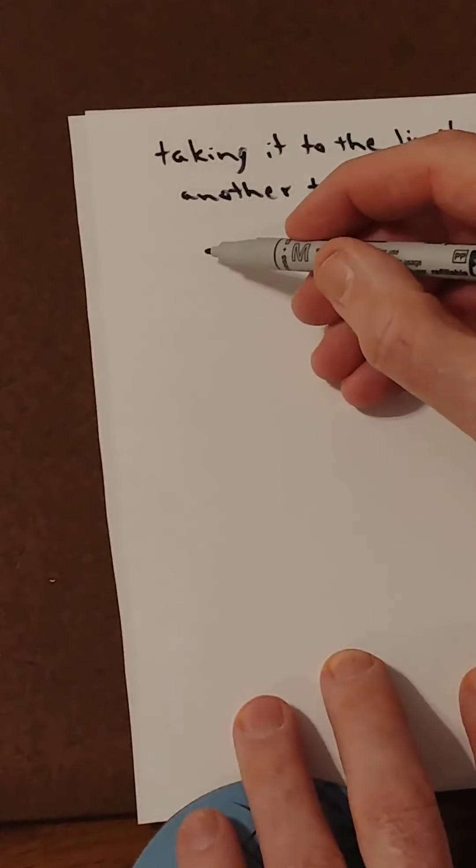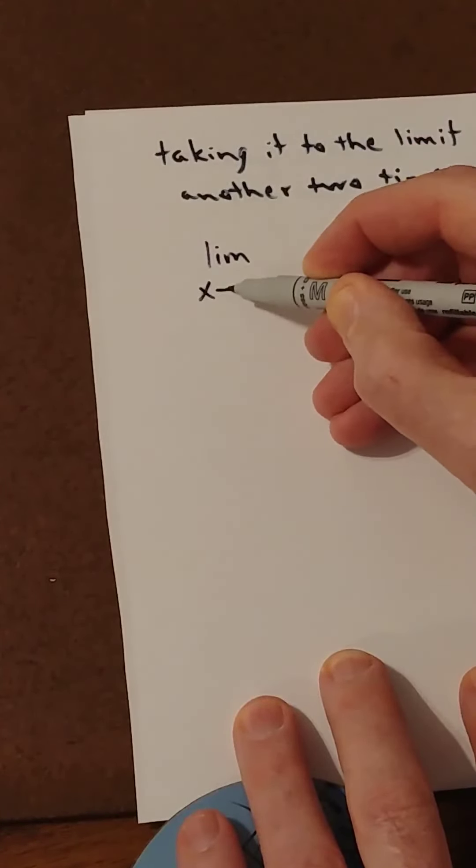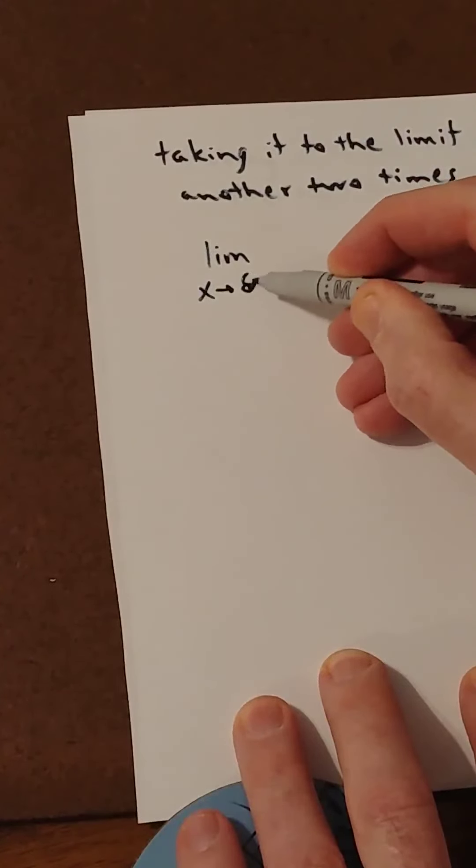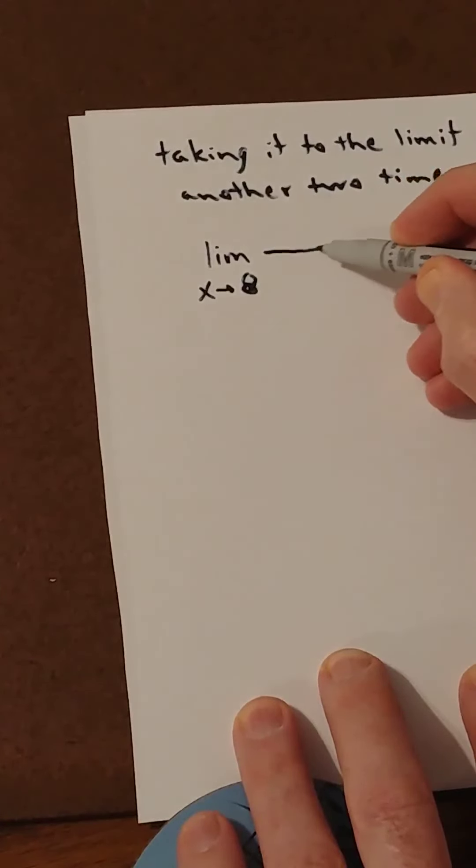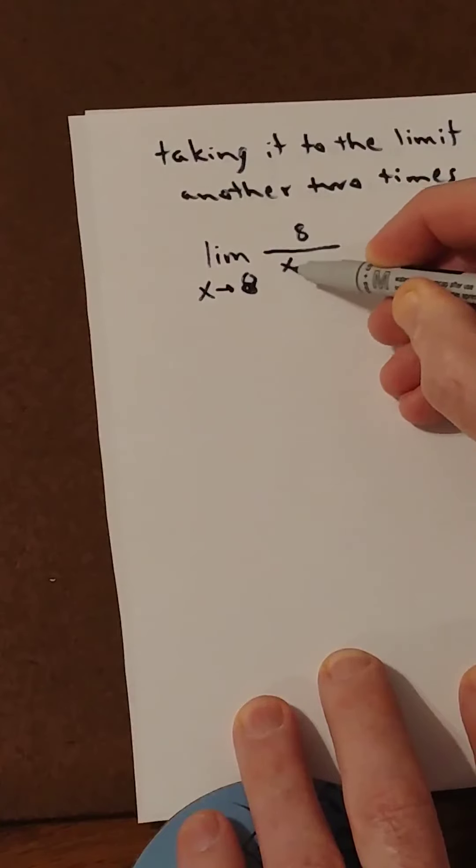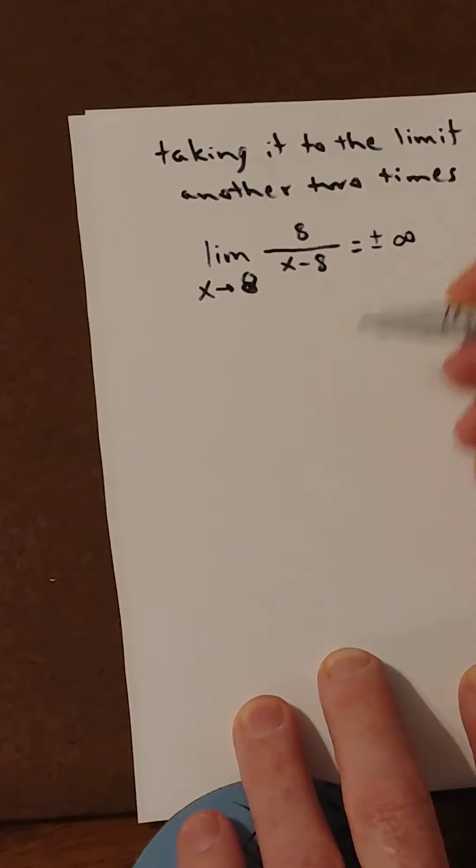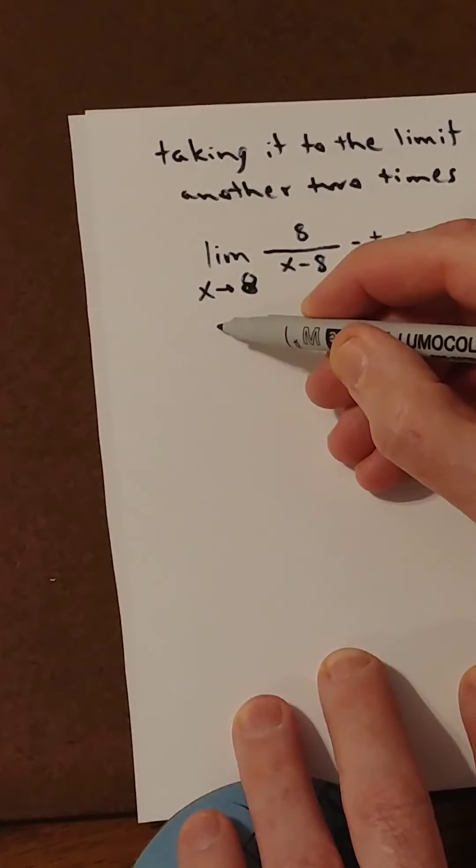Okay, what about this one? The limit as x approaches 8, let's say, of 8 over x minus 8. Yeah, you know that, plus or minus infinity, because as x approaches 8, the denominator approaches 0, and the limit does not exist.